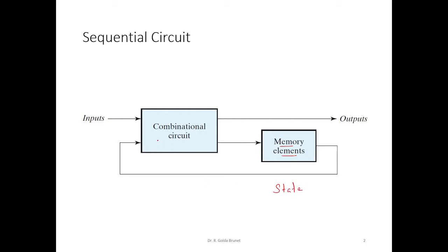There is a combinational circuit which receives input externally as well as inputs from the memory units. So there are two types of inputs: one is the external input, the other input comes from the previous output of the combinational circuit, or the previous state of the circuit is also fed as input.